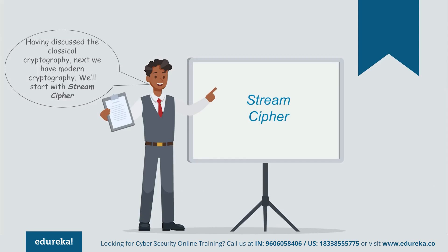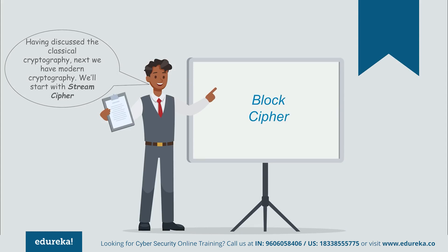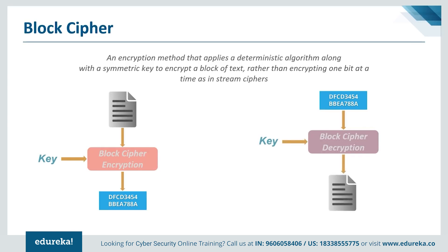A stream cipher encrypts text by applying a cryptographic key and algorithm to each binary digit in a data stream one bit at a time. This method is not much used in modern cryptography. The main alternative is a block cipher, where a key and algorithm are applied to a block of data rather than individual bits. A common block cipher, AES, encrypts 128-bit blocks with a key of either 128, 192, or 256 bits in length. Block ciphers are pseudo-random permutation families that operate on fixed-size blocks of bits.